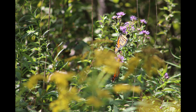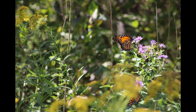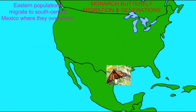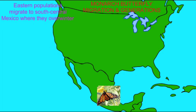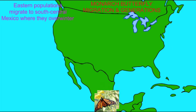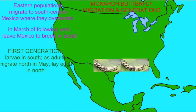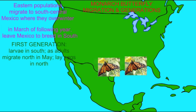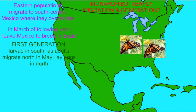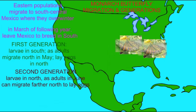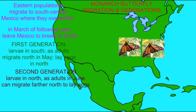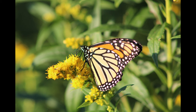The majority of monarch butterflies — and certainly those of the east — migrate to south-central Mexico where they overwinter. In March of the following year, they leave Mexico and lay their eggs in the southern United States, giving rise to the first generation of the new year.